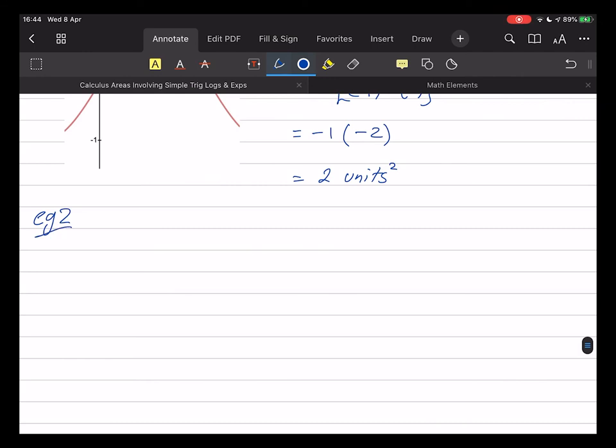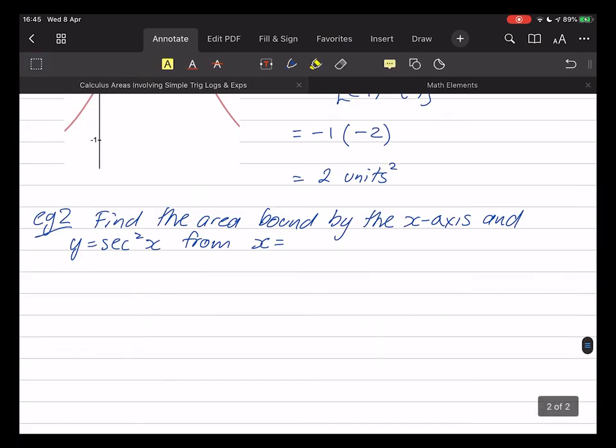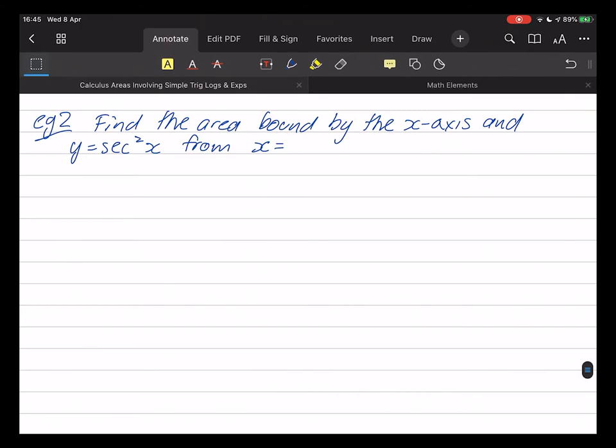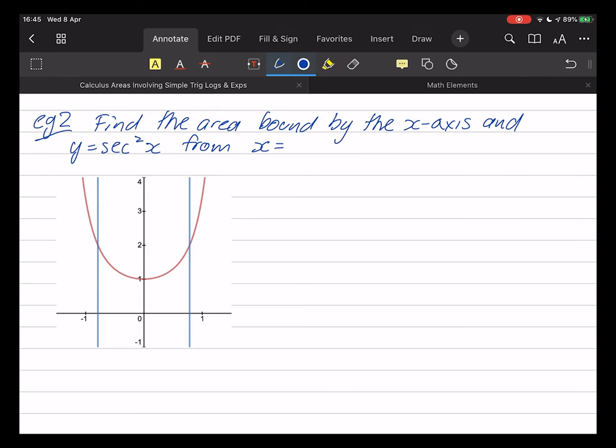Example two. Find the area bound by the x-axis and y equals sec squared x from minus pi on 4 to pi on 4. So the area I'm after, in this case, is this one.